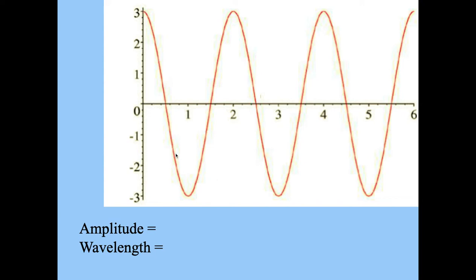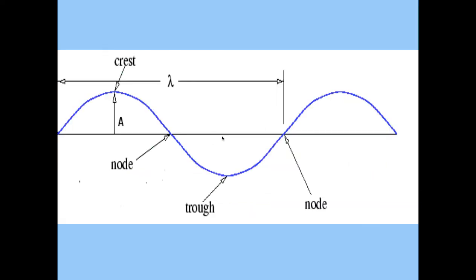Amplitude here is the height from here to here. So it'd be three. The wavelength would be a length of a full wave. So it's from crest to crest, and this would be two. So the crest is the top of the wave. The trough is the bottom of the wave.